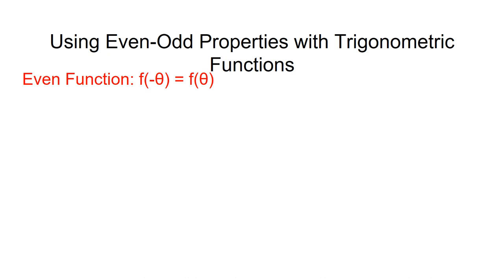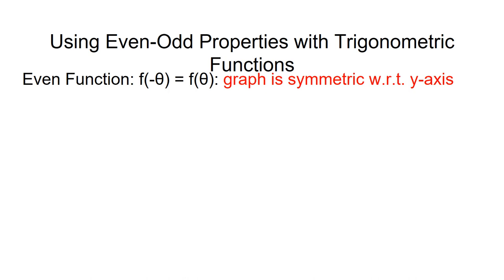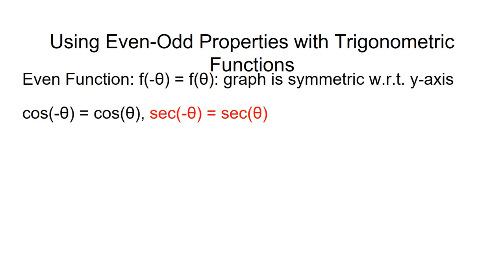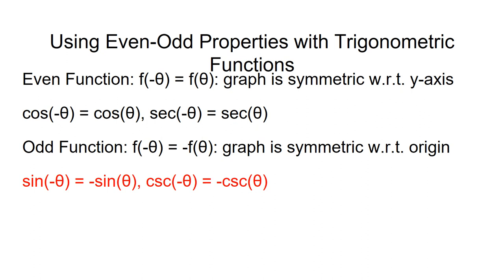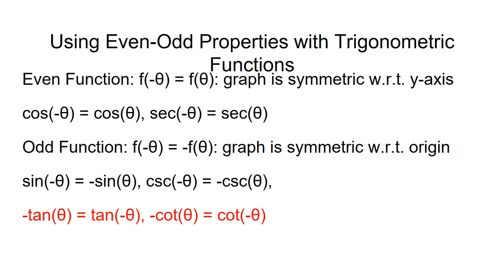The last property of trig functions we will consider is symmetry. A function f of theta is an even function when f of minus theta is equal to f of theta, which means the graph of the function is symmetric about the y-axis. Cosine theta is an even function, as is its reciprocal, secant theta. A function is an odd function if f of minus theta is equal to minus f of theta. The graph of an odd function is symmetric with respect to the origin. Sine of theta is an odd function, as is its reciprocal, cosecant theta. Tangent theta and cotangent theta are also odd functions.